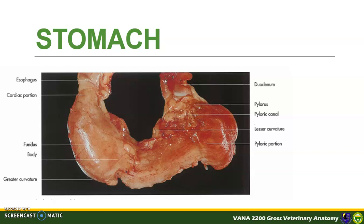The greater curvature is a long, convex surface of the stomach extending from the cardia to the pylorus. The greater omentum is attached to this structure, and the spleen is also present at the greater curvature — we will discuss its anatomy further when we discuss the lymphatic system. The lesser curvature is a short, concave surface of the stomach extending from the cardia to the pylorus, and it is the attachment site of the lesser omentum.